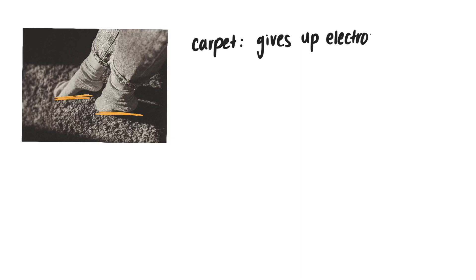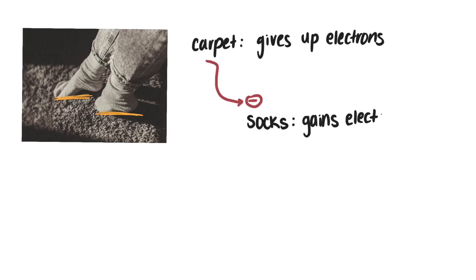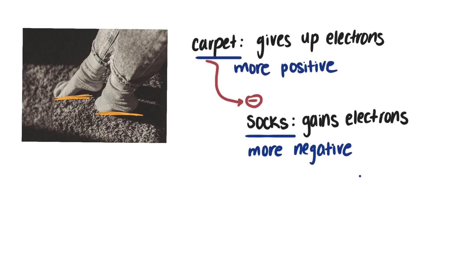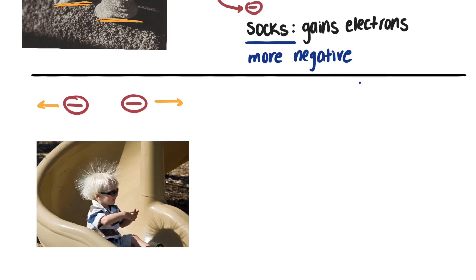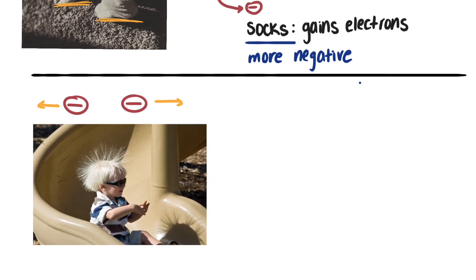When two objects are rubbed together, one of the objects gives up electrons and the other one gains the electrons. This means that one of them is now more positively charged while the other is more negatively charged. We know that like charges repel each other, so the two negative charges want to get as far away from each other as possible.